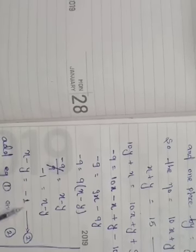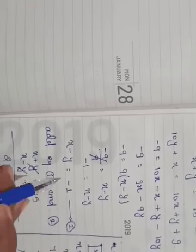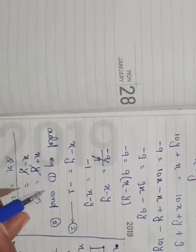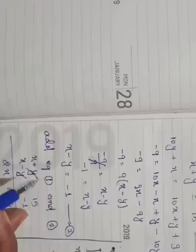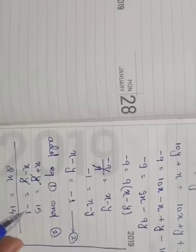This is our second equation. Now we will add equation 1 and equation 2. x plus y equals 15, and x minus y equals minus 1.